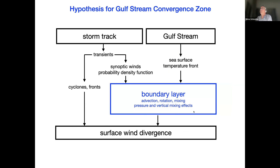The hypothesis I'm developing here is that the Gulf Stream Convergence Zone results from the storm track and sea surface temperatures together giving us the surface wind divergence. The storm track does double duty: it's associated with transients that by themselves are associated with very large values of surface wind divergence. The storm track transients supply the synoptically changing winds, which together with the sea surface temperature front give us an aggregated response of the boundary layer that yields the surface wind divergence.